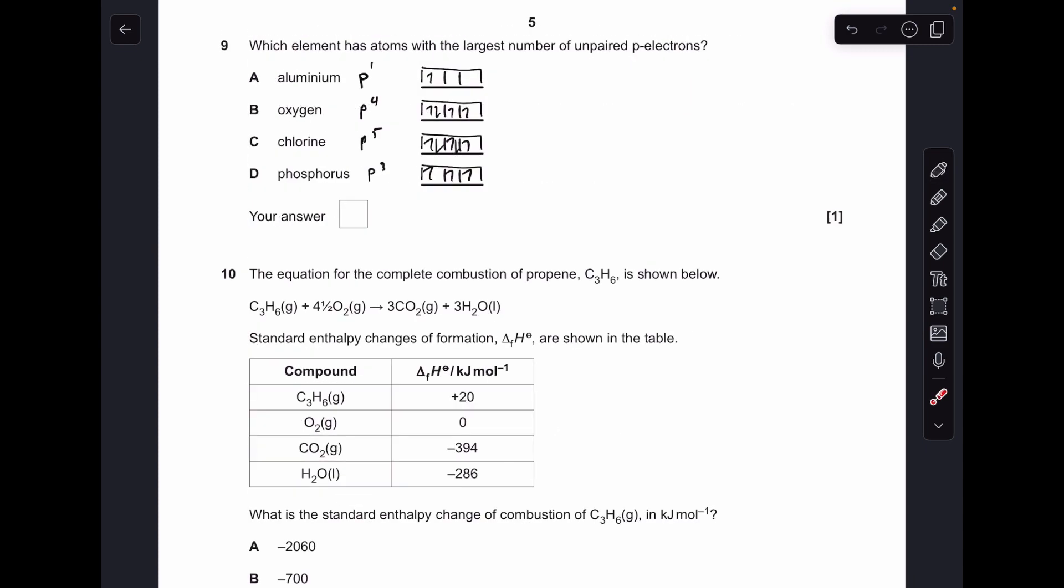Number nine: we just need to work on the P subshell configuration. Aluminium obviously has one unpaired P electron. Oxygen, you've got two. Chlorine, you've just got the one. Obviously phosphorus is P3, so they're all unpaired, so that was the answer.